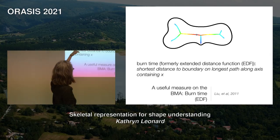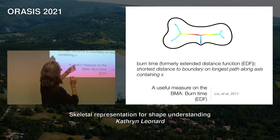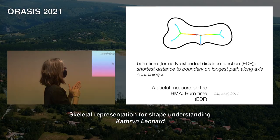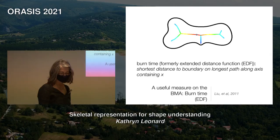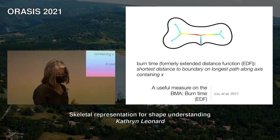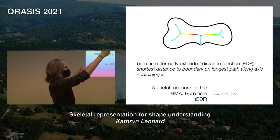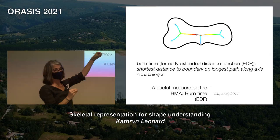The extended distance function gives a kind of depth-based measure for pieces of the shape as defined on the medial axis. Parts of the medial axis corresponding to shape parts that are not very deep are shown in blue, and the deepest ones are red. So the radius of the maximally inscribed circles gives us a width at each point on the medial axis, and this burn time EDF gives us a depth measure on the medial axis.